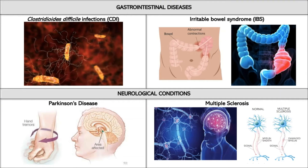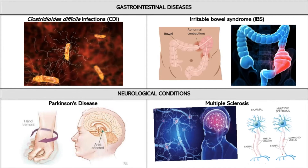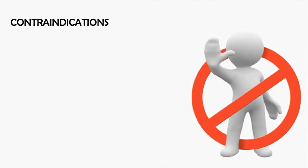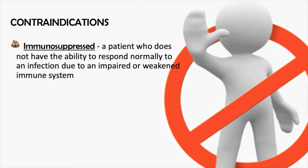Doctors may also recommend fecal transplants to manage other gastrointestinal conditions, such as irritable bowel syndrome. Transplants could eventually treat a variety of conditions, including neurological conditions such as Parkinson's disease and multiple sclerosis. These associations may exist because gut health affects the body's ability to absorb and use nutrients. It's important to also indicate those who are not eligible for an FMT, such as those patients who are immunosuppressed — meaning those who don't have the ability to respond normally to an infection due to an impaired or weakened immune system.